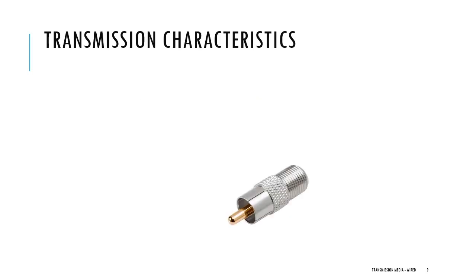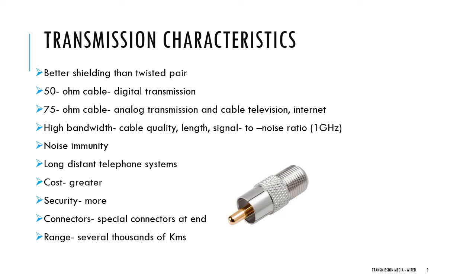Transmission characteristics of coaxial cable: coaxial cables provide better shielding than twisted pair. It can be used in analog as well as digital transmission. For digital transmission, a 50-ohm cable is normally used, and for analog transmission or cable television transmission, a 75-ohm cable is used. It supports high bandwidth and higher noise immunity, and can be used for long-distance telephone communication. The cost of coaxial cable is a little greater than twisted pair, but it provides more secure transmission.